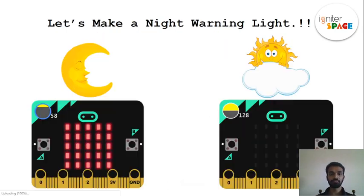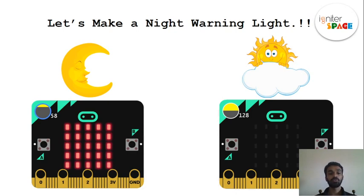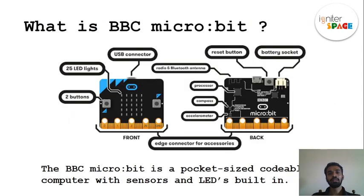Today we're using knowledge gained from this lesson to solve a problem. Using Micro:bit, we're going to make a warning light — just like the warning lights in vehicles — but this one is for pedestrians.